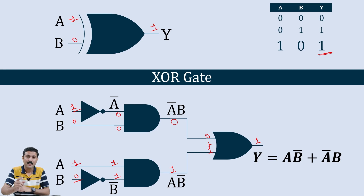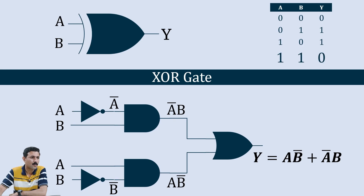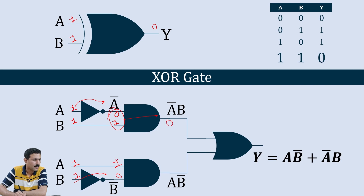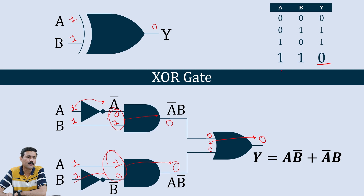For the final combination, A = 1 and B = 1, the output is 0. The NOT gate on A gives Ā = 0. AND of 0 and B (1) gives 0. The NOT gate on B gives B̄ = 0. AND of A (1) and B̄ (0) gives 0. The OR gate has inputs 0 and 0, so 0 + 0 = 0. Whenever both inputs are the same, the output is 0; whenever both inputs are different, the output is 1.